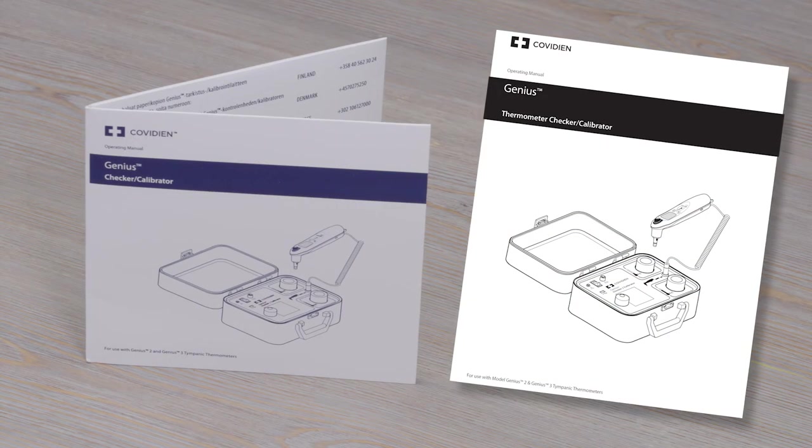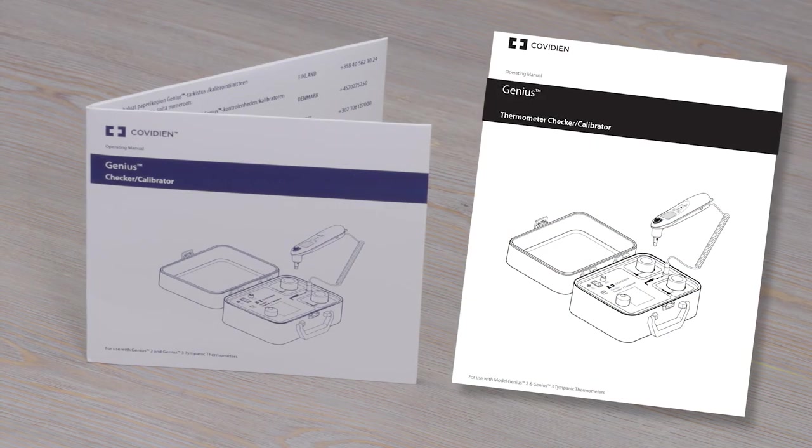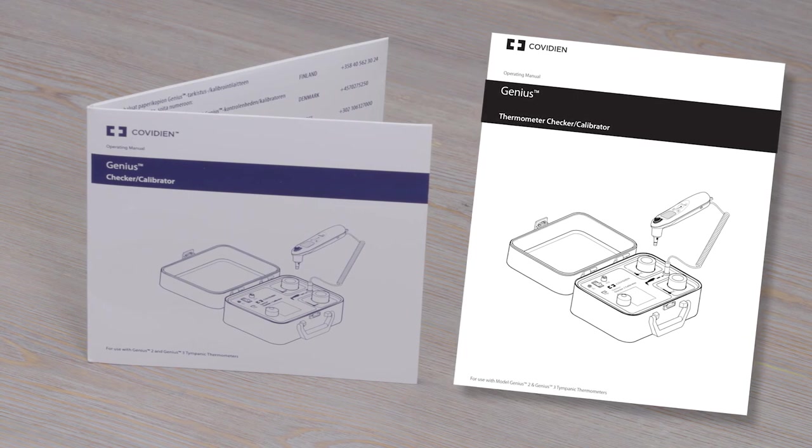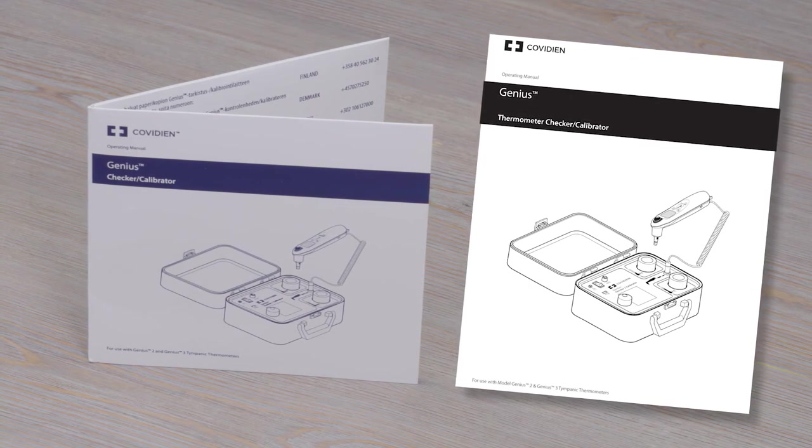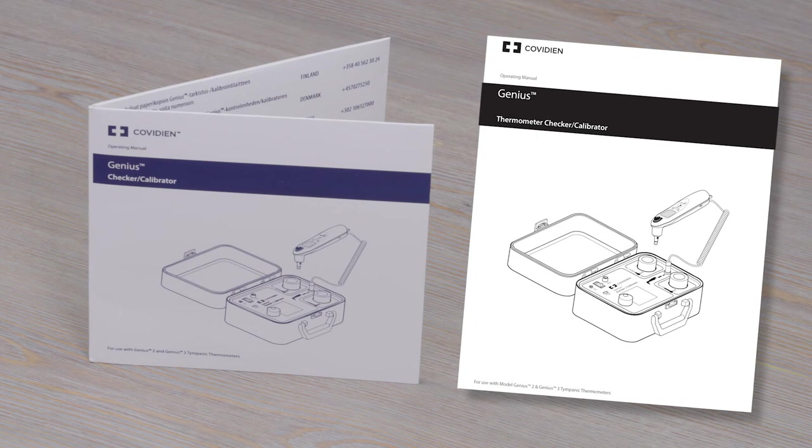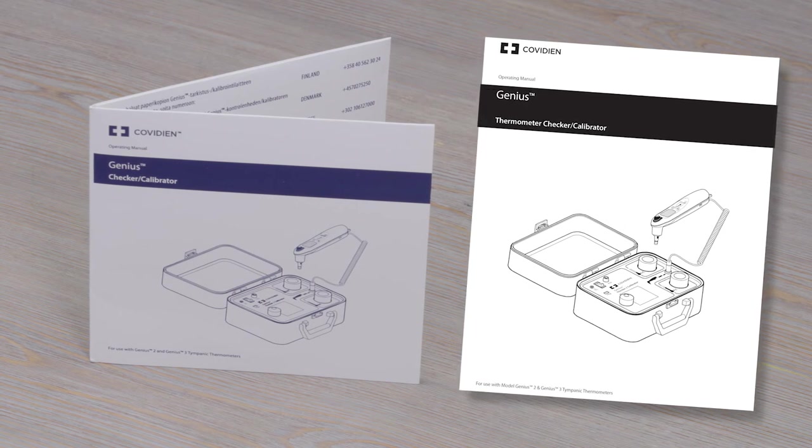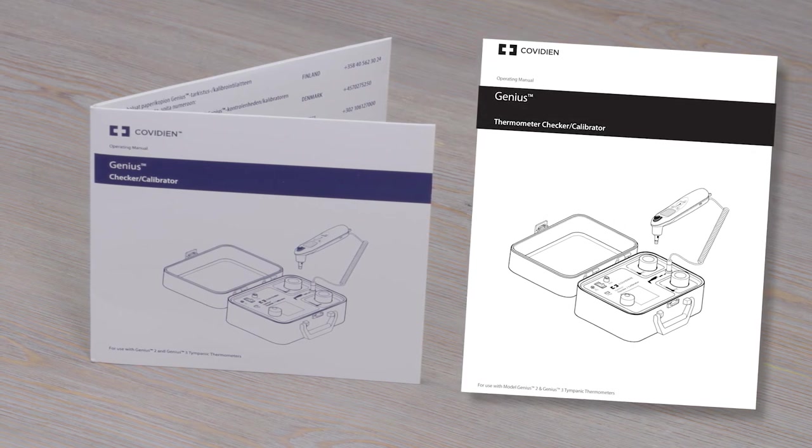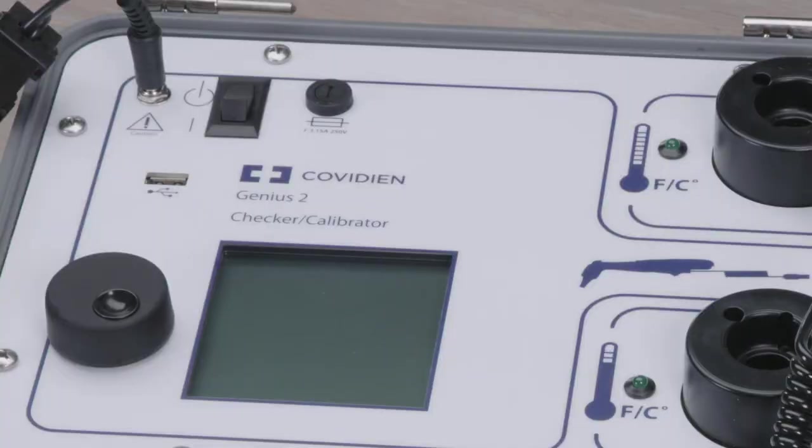A list of status flags and their descriptions can be found in the Checker Calibrator Instructions for Use Manual. If you have completed this step and are still experiencing failed calibration, please attempt recalibrating your thermometer again.